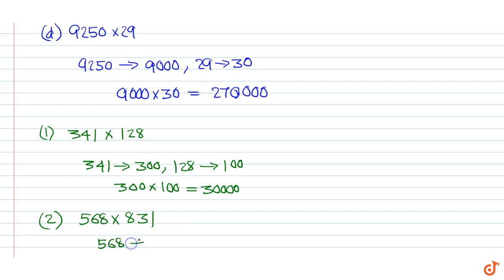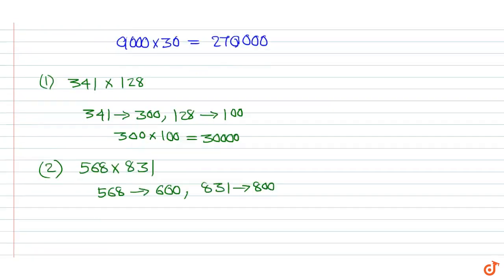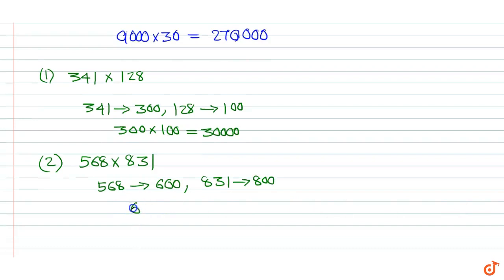568 can be rounded off to 600. 831 can be rounded off to 800. Therefore the product is 600 x 800 which is 480,000.